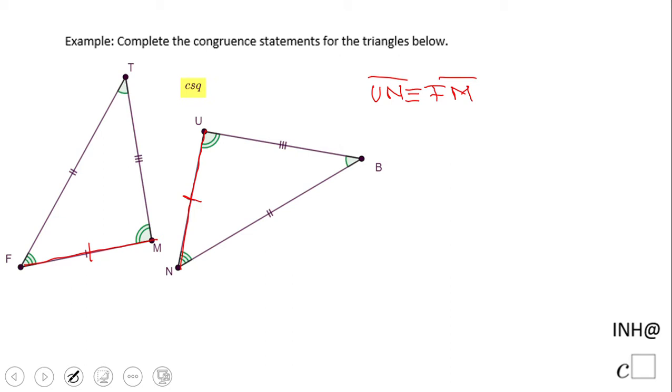Also we notice what else. We notice that these two sides are congruent. Why? Because they have the same two marks. So let's start with NB. NB congruent with FT. And again the order here does not matter.